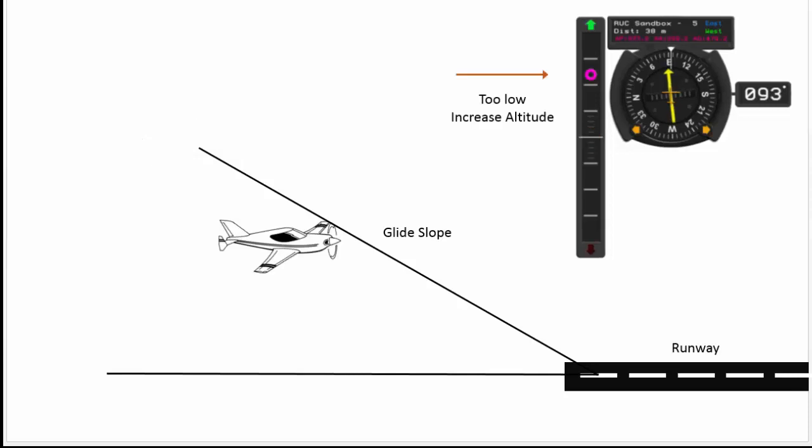This indicator shows you that the plane is too low. You can see on the glide slope line the plane is below it, so on the glide slope indicator that purple dot is above the center line, which means that you're too low. You either need to increase your altitude or increase the power for a period of time until you get back to the center of the glide slope indicator.